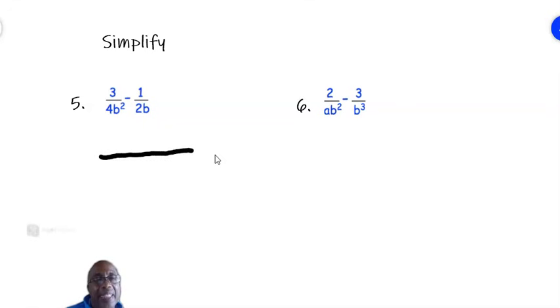And we find the LCM of 4b squared and 2b. Now when you have both numbers and letters, find the LCM separately. The LCM of 4 and 2 is 4. 4 is the lowest number both 4 and 2 can be divided into without a remainder. And the LCM of b and b squared, we take the highest power. So the LCM is b squared.